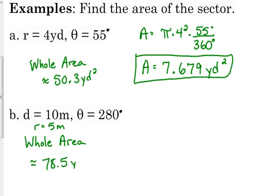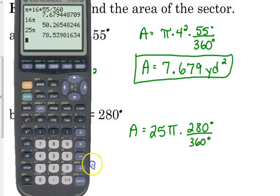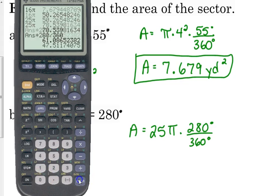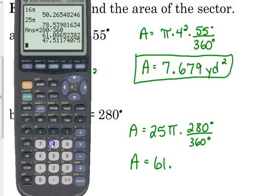Now, I don't want you to use that rounded number in your calculations. I just want you to use it for making sense of your answer later on. So our area is 25 pi times 280 over 360. 61.087 square meters.